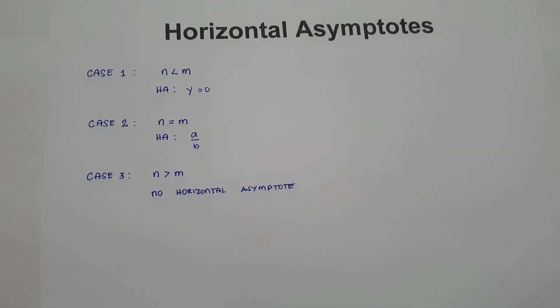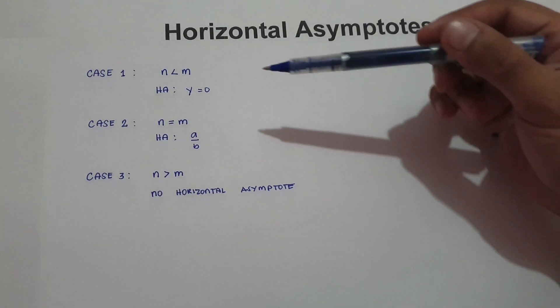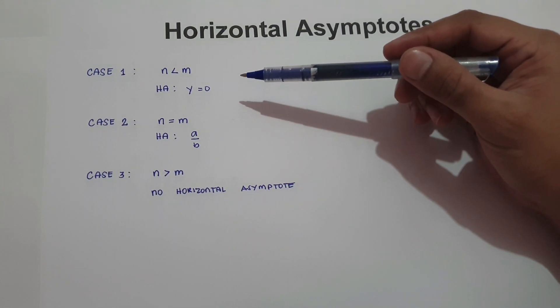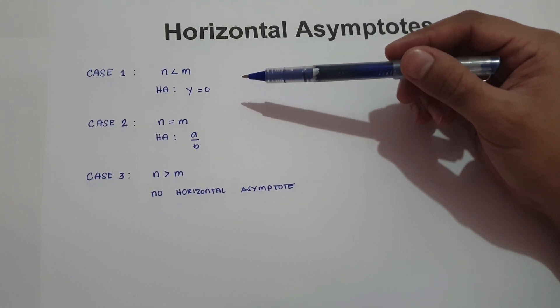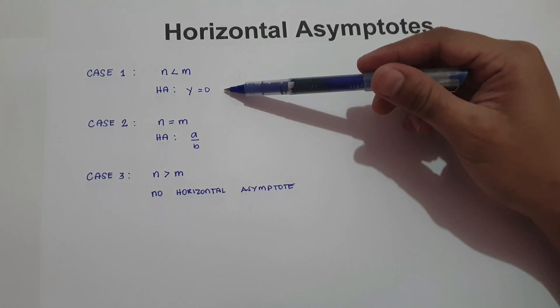There are three cases that we need to remember in finding the horizontal asymptote. In case number one, if the degree of the numerator is less than the degree of the denominator, the horizontal asymptote is zero.